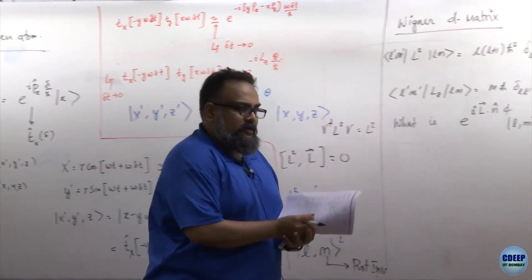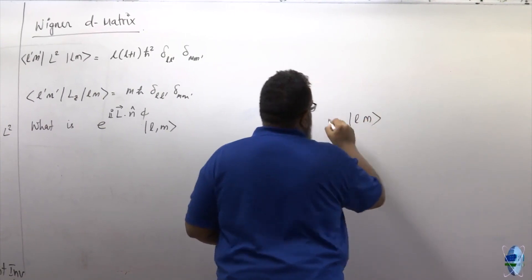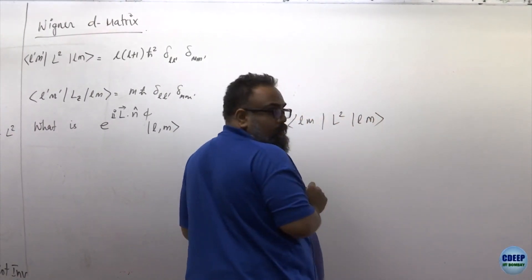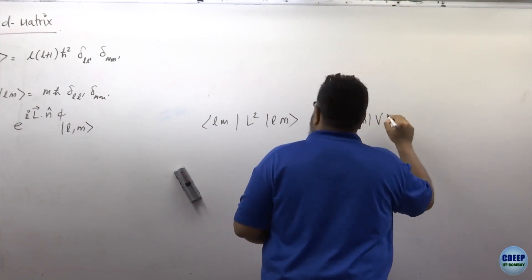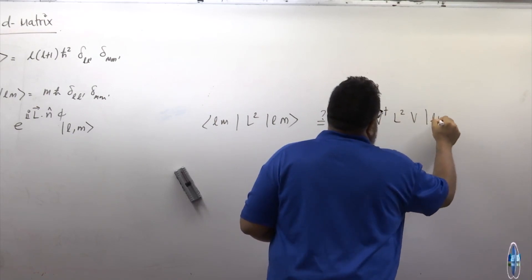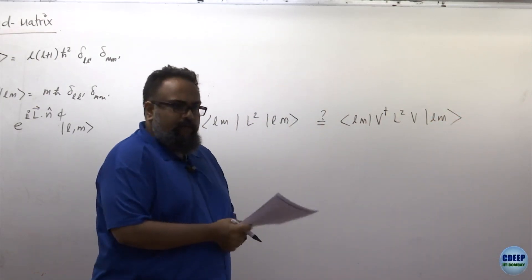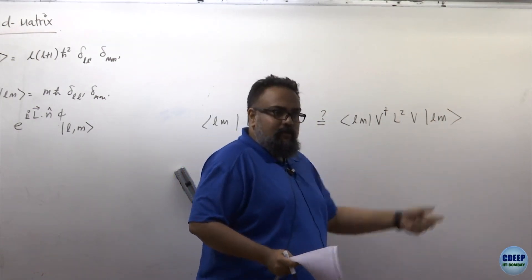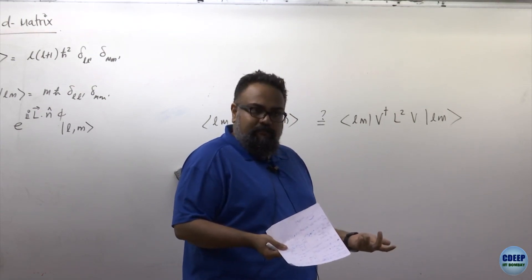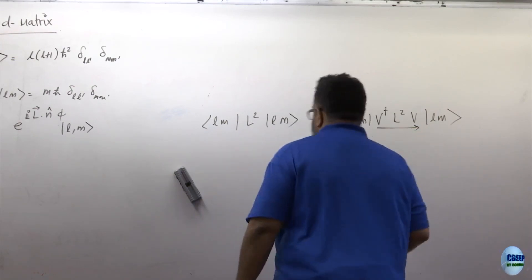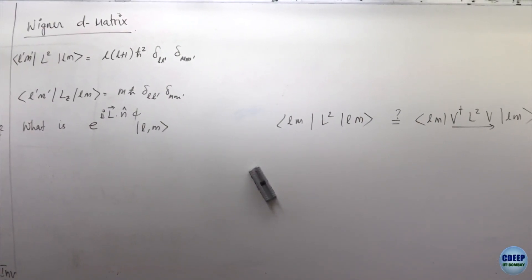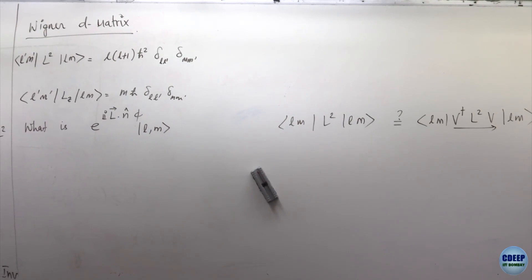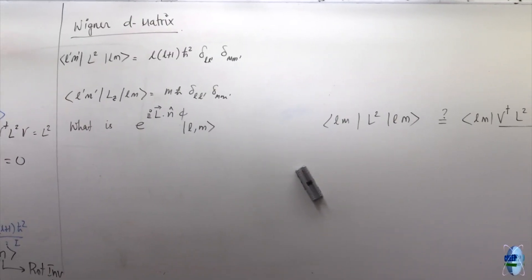The question I'm really asking is: what is e to the i·L·n-hat times phi acting on an |L,M⟩ state? I want to take an operator expectation value. For instance, I have an |L,M⟩ state and I want to take the L² expectation value. I want to rotate this quantum state and ask whether the L² quantum number stays the same. Here we know the answer because L² commutes right through.